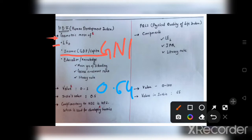Complementary to HDI is Human Poverty Index, which is used for developing countries.